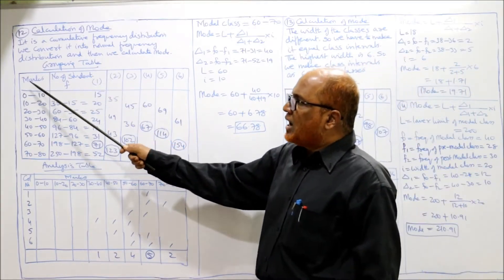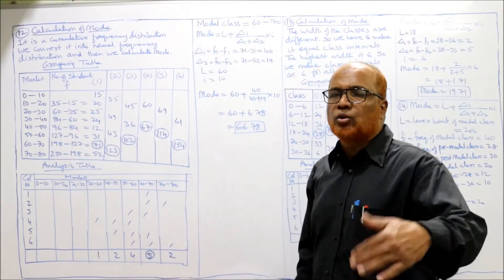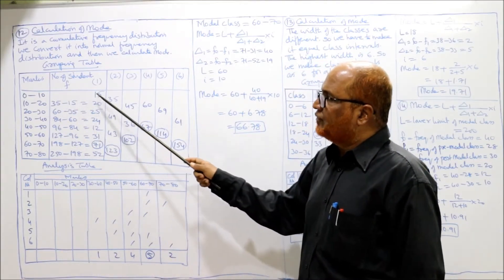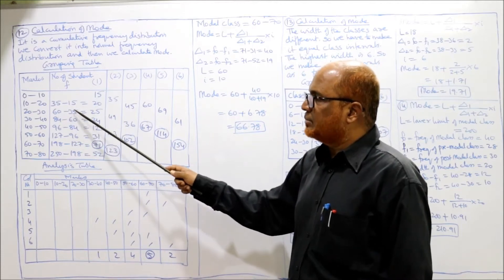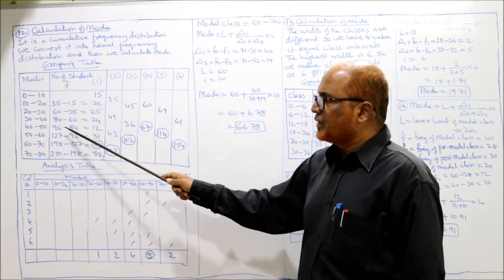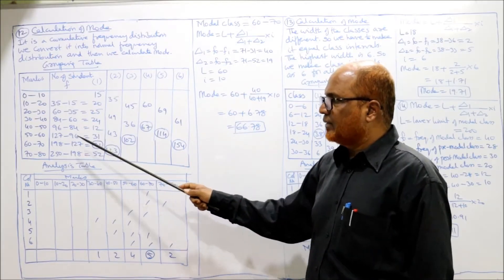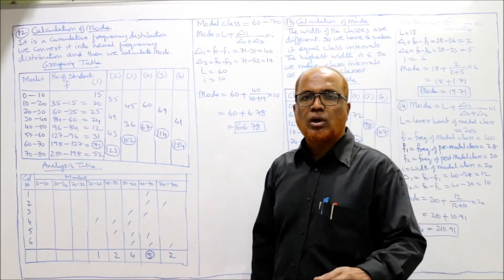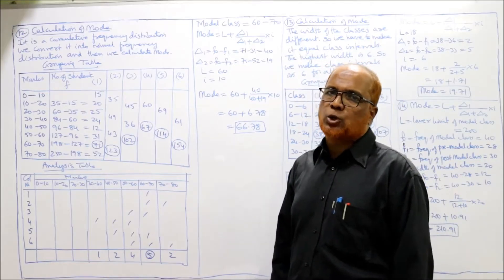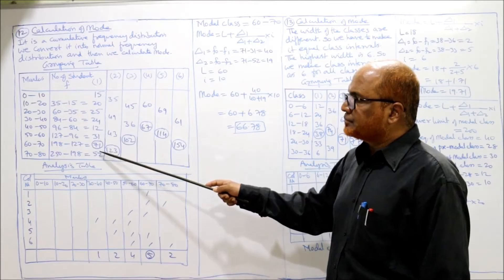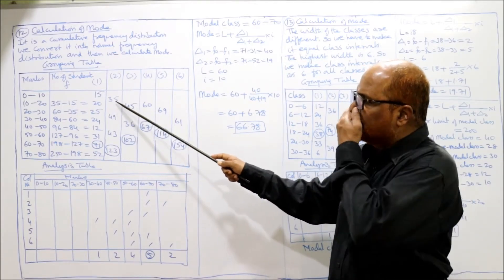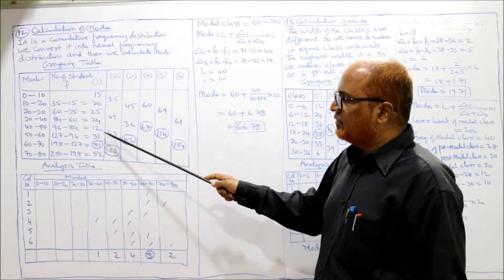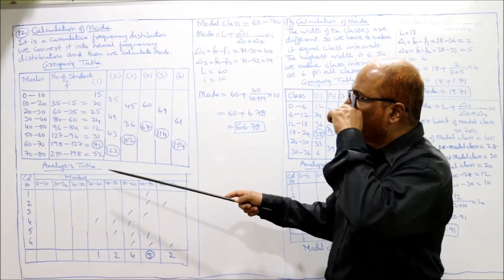Now grouping table: marks 0 to 10, 10 to 20, 20 to 30 — we have converted into normal distribution. Frequencies: 15, 20, 25, 24, 12, 31, 71, 52. This is the normal frequency distribution. Same procedure now. First column: same frequency. Second column: group in twos from the top — 15+20=35, 25+24=49, 12+31=43, 71+52=120.